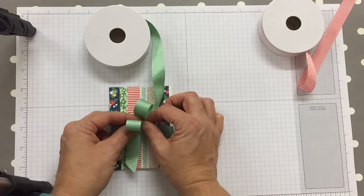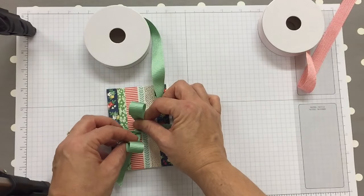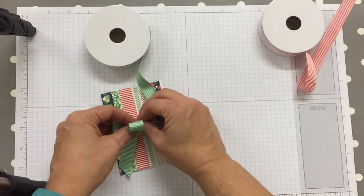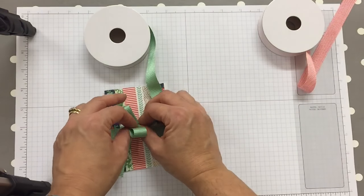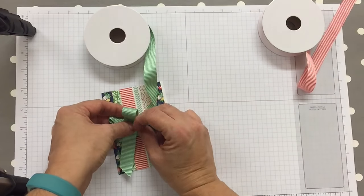Now this thumb here is sort of creating a little gap, so I'm going to cross them over each other. The one on the left is going to cross over the one on the right, and I'm going to push it to the back.